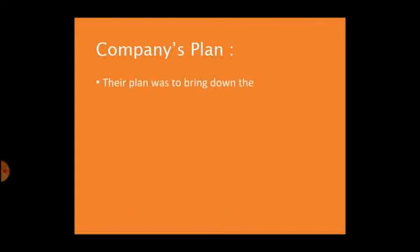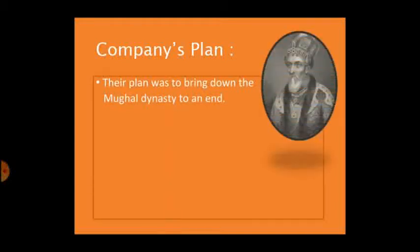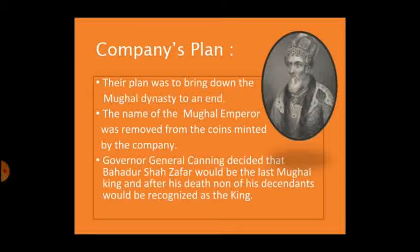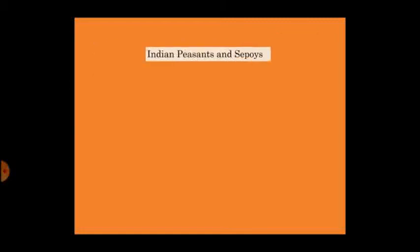There was also a plan to bring the Mughal dynasty to an end. Lord Canning declared that the East India Company would be taking up the Mughal emperor's rule. The name of the Mughal emperor was removed from the coins minted by the company. Governor General Canning decided that Bahadur Shah Zafar would be the last Mughal king, and after his death none of his descendants would be recognized as king — they would only be called princes and would have to vacate the Red Fort.